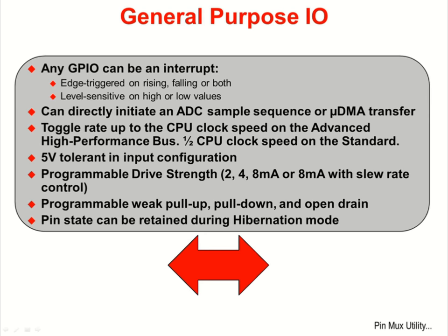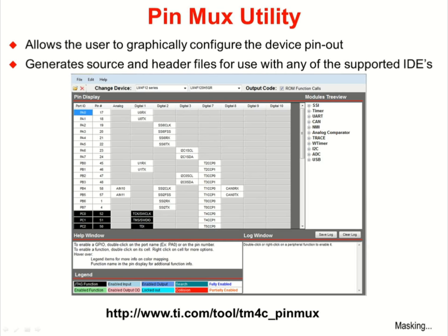As outputs, the drive strength is programmable to be 2, 4, or 8 mA. The 8 mA setting also allows you to configure the slew rate. GPIO pins have programmable weak pull up, pull down, and open drain modes. The pin states can be retained during hibernation to correctly connect to external circuitry even while the device sleeps. The PinMux utility is a graphical interface that allows the user to easily configure the GPIO. Since the pins on Tiva C-Series devices are heavily multiplexed, the utility generates human readable source and header files that can be included in your project regardless of the IDE you are using.